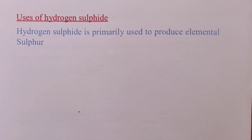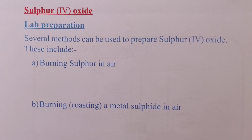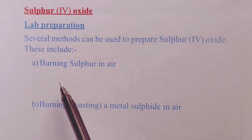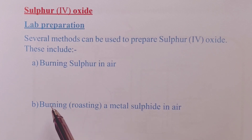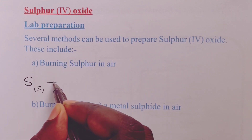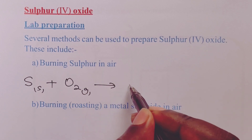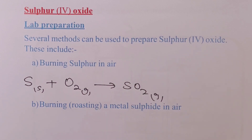We now proceed to sulfur dioxide (SO2) gas. For lab preparation, we have around 4 methods we can use. Method one is burning sulfur in air, where sulfur would be oxidized to obtain sulfur dioxide — just as simple as that.